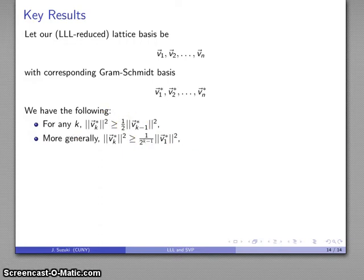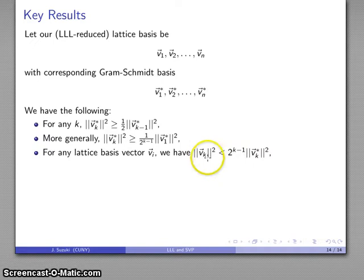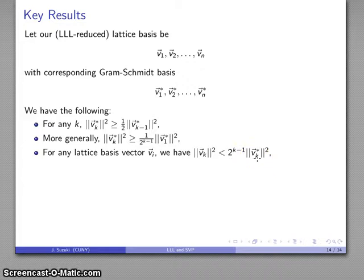More generally, we can cascade down to that first Gram-Schmidt basis vector by repeatedly applying this inequality. And finally, the lattice basis vectors themselves are related to the Gram-Schmidt basis vectors by this inequality: the square of the magnitude of the lattice vector is strictly less than 2 to the power of k minus 1 times the square of the magnitude of the k-th Gram-Schmidt basis vector.